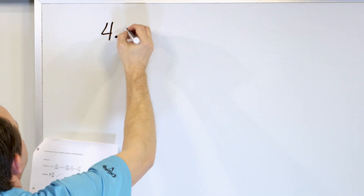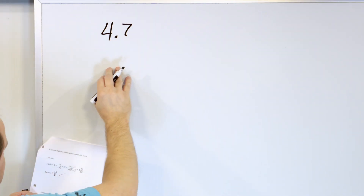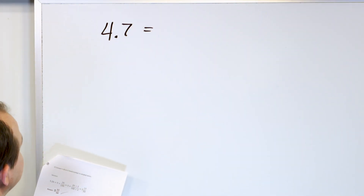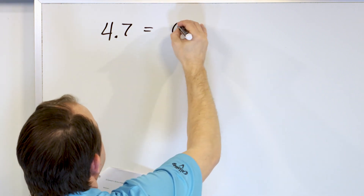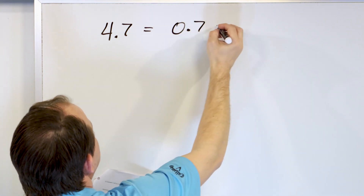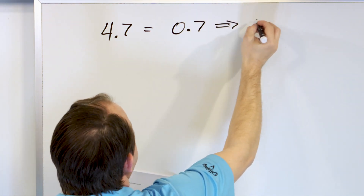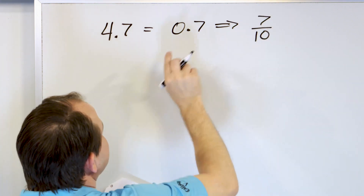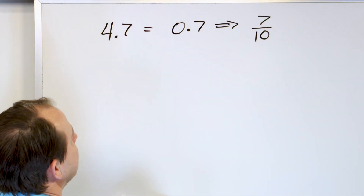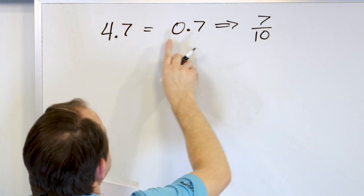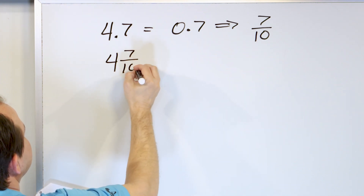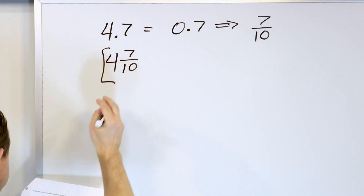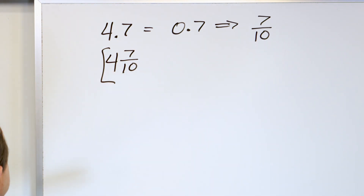Next problem: 4.7. We're going to convert this into a mixed number. Looking at the fractional part 0.7, it's 7 in the tenths position — 7 tenths. I can't simplify that anymore, so I just attach it to the whole number of 4 to make it 4 and 7 tenths. That's the final answer. Some of these don't really require much work.